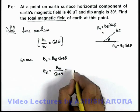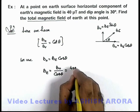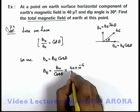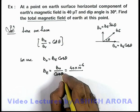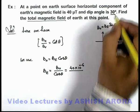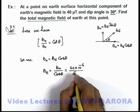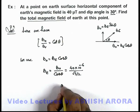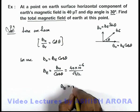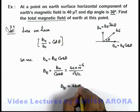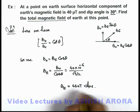If we substitute the value of B_H, we are given 40 times 10 to the power minus 6 tesla, divided by cos 30 degrees, which is root 3 by 2. On simplifying, the value of B_E we get is 46 microtesla at this point. That is the answer to this problem.